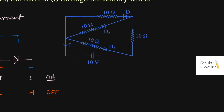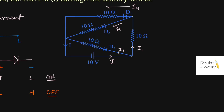Now looking at the actual circuit, let me first mark the current. This is the current I, which is entering the negative terminal of the battery, and the same current also flows through the positive terminal. At this junction point, this current will get divided — let's say I1 in one branch and I2 in another branch. Again at another junction, the current will further divide into I3 and I4. Now by simply looking at the direction of current, we can find the polarity.